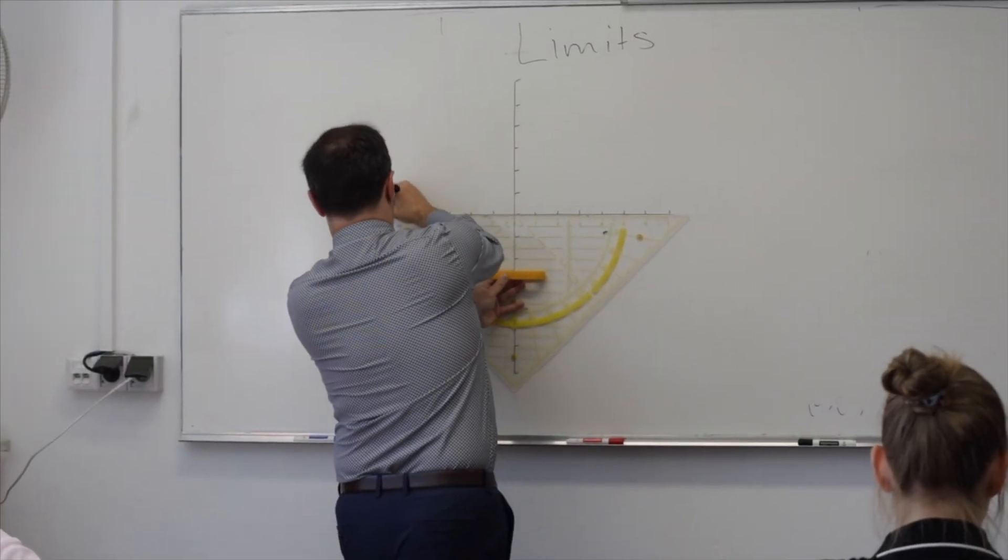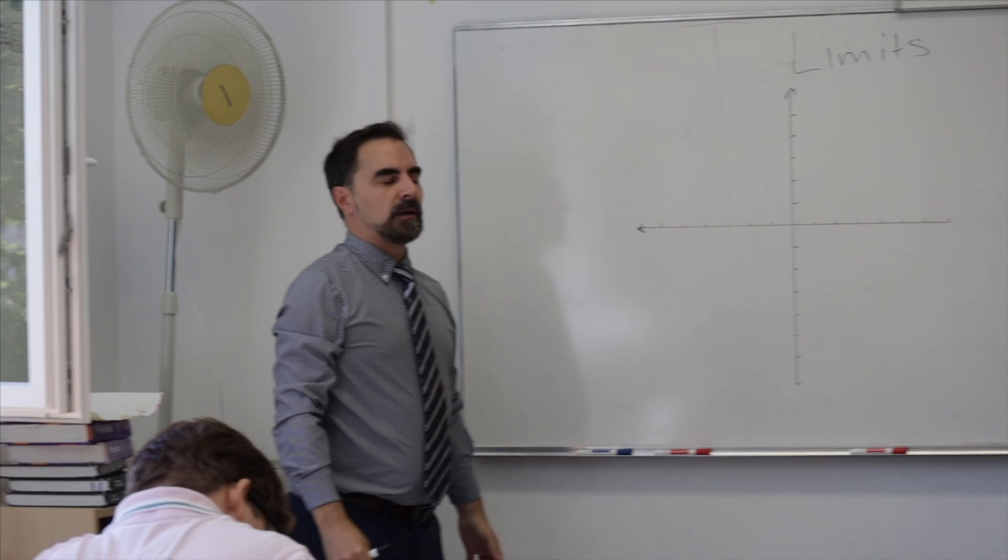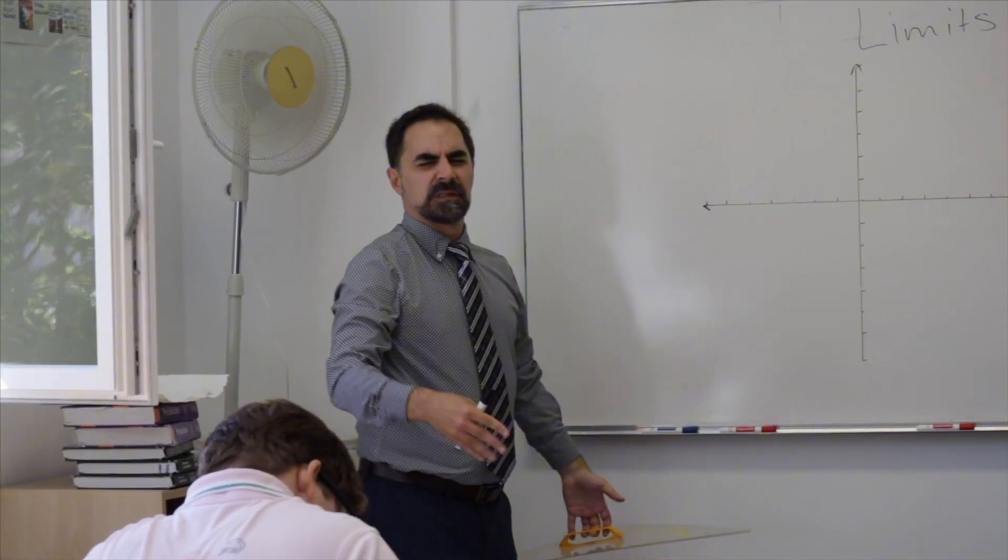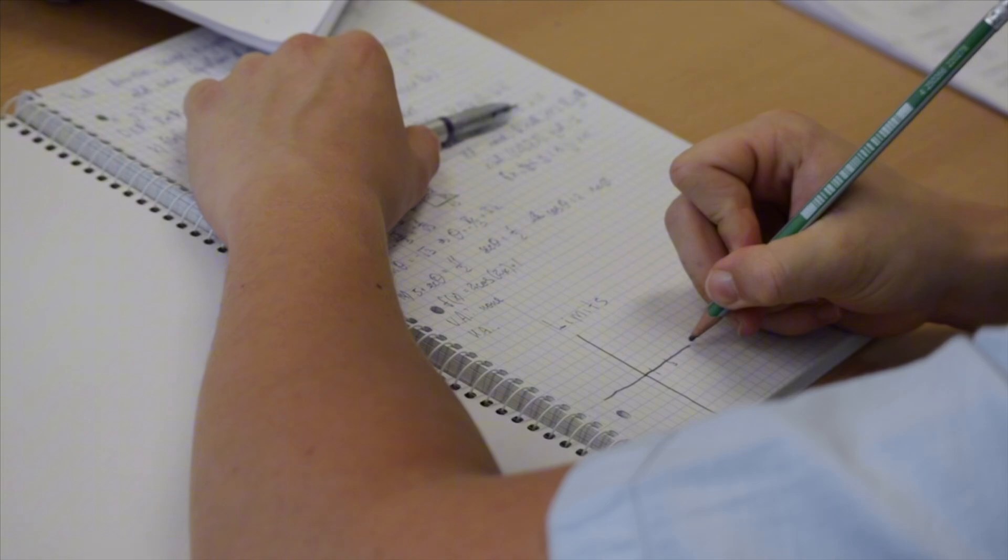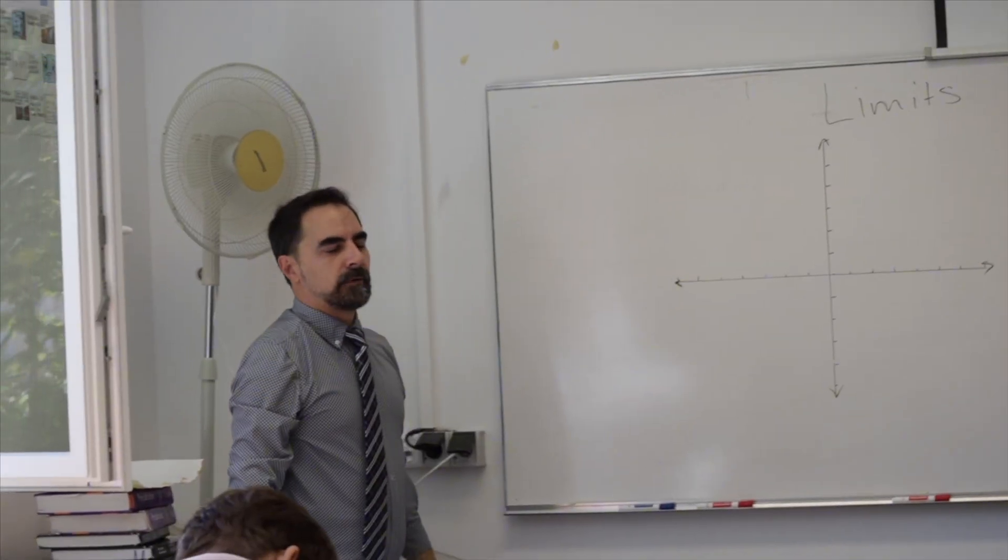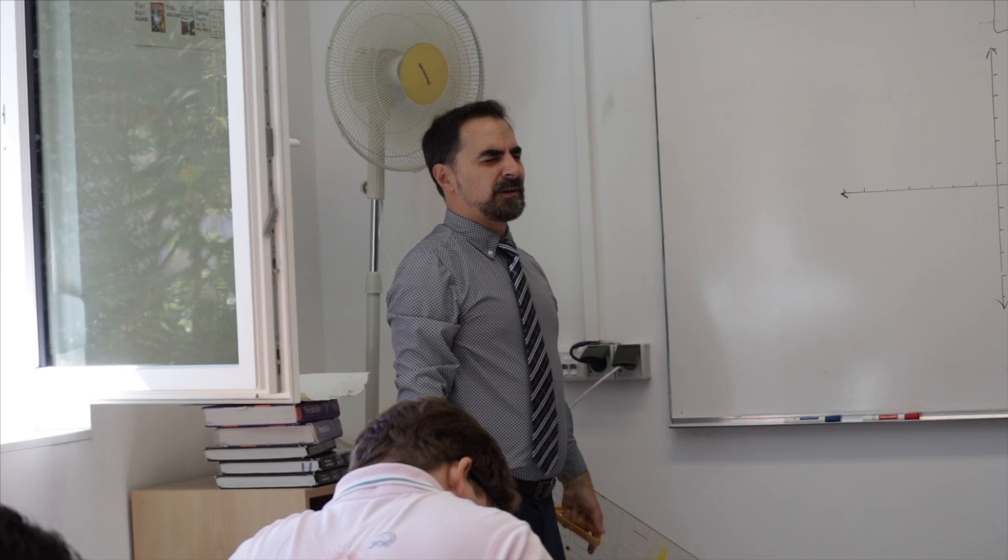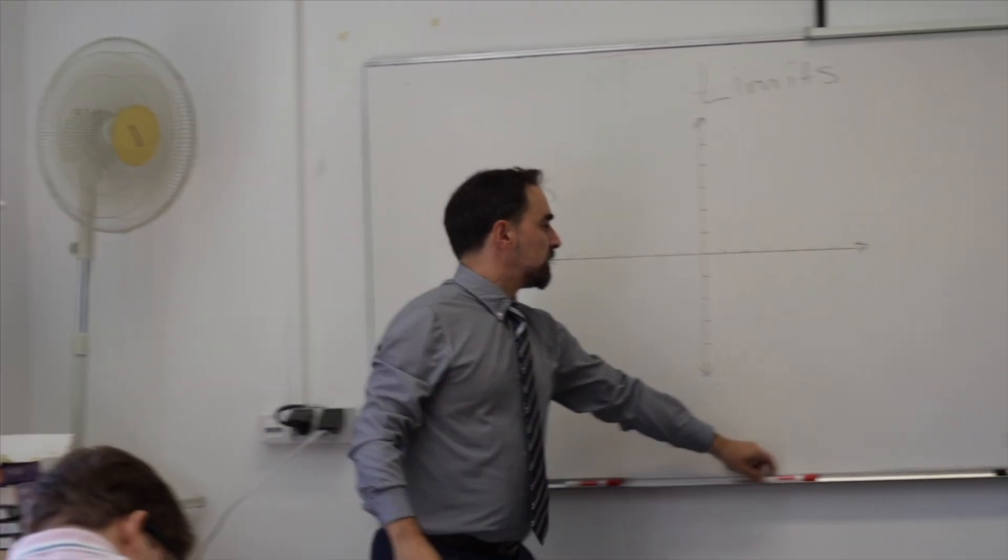Well, normally in math, if I ask you to justify your answer, you can't say, well, obviously it's two. You have to show some reasoning and some things. Because we're skipping a lot of the why behind this, it's going to be okay when we're talking about limits to just kind of say, well, obviously it's three. Because what we have is tools to solve difficult problems.